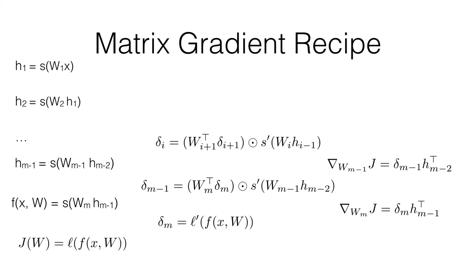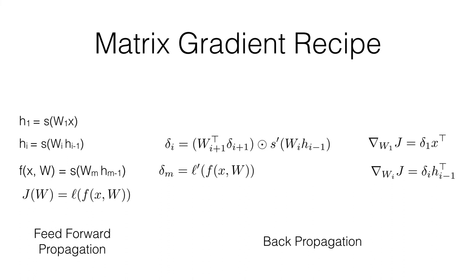We continue working backwards for any layer. Finally, the gradient with respect to the first weight matrix W1 is computed by multiplying the corresponding delta by the original input x. You can summarize all of this in just a few equations — those are all you need to implement backpropagation yourself. Nowadays modern deep learning software toolkits do this automatically, but it's good to understand how it works.